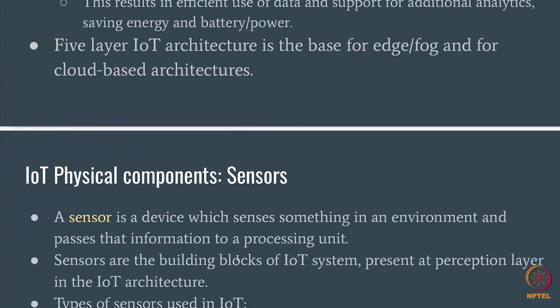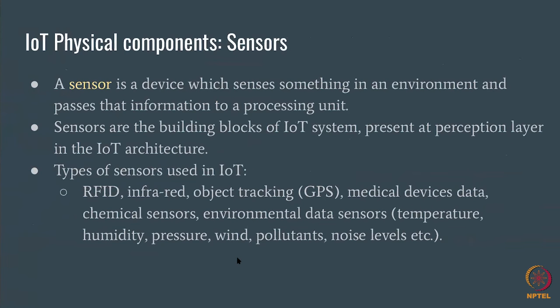Looking at physical components of IoT: sensors are the building blocks at the perception layer. Typical IoT sensors include RFID, infrared, GPS, medical devices, chemical sensors, temperature, humidity, pressure, wind, pollutants, and noise. In sophisticated IoT systems, cameras, phones, and Alexa can also act as sensors.